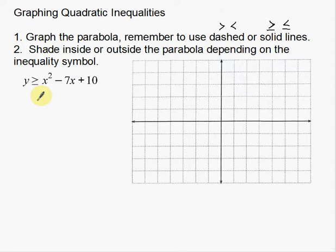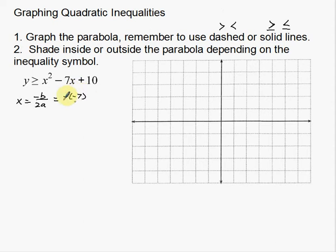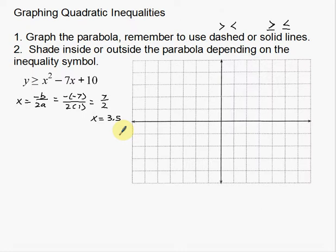You should know how to graph parabolas before this, but I'm just going to very quickly go over it. The first thing I want to do is find the vertex using x equals negative b over 2a. This formula gives us the x-coordinate of the vertex. In this case, my b number is negative 7 — don't make the mistake of missing that negative. So I have negative negative 7 over 2 times 1, which gives me positive 7 over 2. So x equals 3.5. I'm going to use decimals for this video.